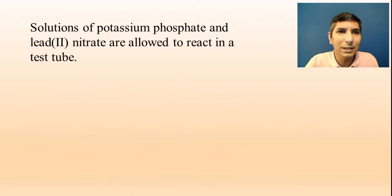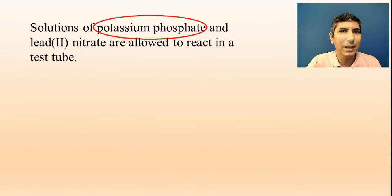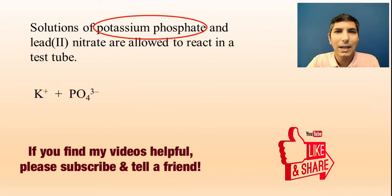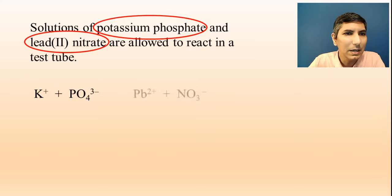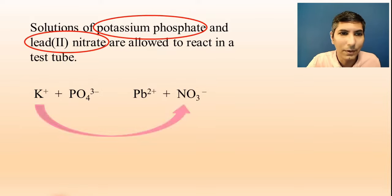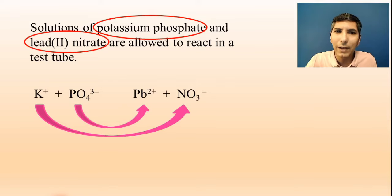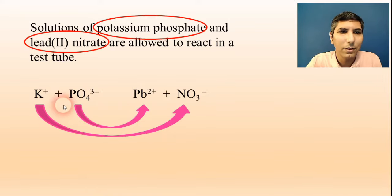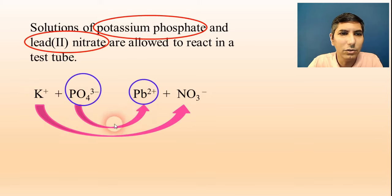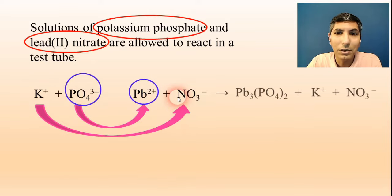Let's try another one. Solutions of potassium phosphate and lead(II) nitrate are allowed to react in a test tube. We're going to take the potassium phosphate — that's a solution, so it's K+ and phosphate is PO₄³⁻. And we're going to add lead(II) nitrate: Pb²+ and NO₃⁻. The ions are going to swap out, and we have to ask ourselves which of these two combinations is going to make the insoluble compound. Phosphates are generally insoluble, so it's going to be lead(II) phosphate. That means potassium and nitrate are the spectator ions.